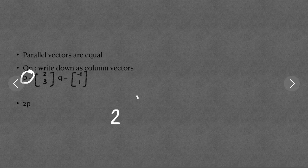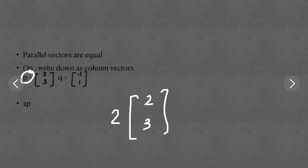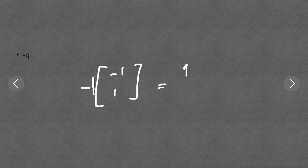Now we need to write these as column vectors. P equals (2, 3) and Q equals (-1, 1). For 2P: we multiply each component by 2, so 2×2 = 4 and 2×3 = 6, giving (4, 6). For minus Q: we apply the negative sign to Q which is (-1, 1), so minus one times minus one is 1 and minus one times one is minus one, giving (1, -1).